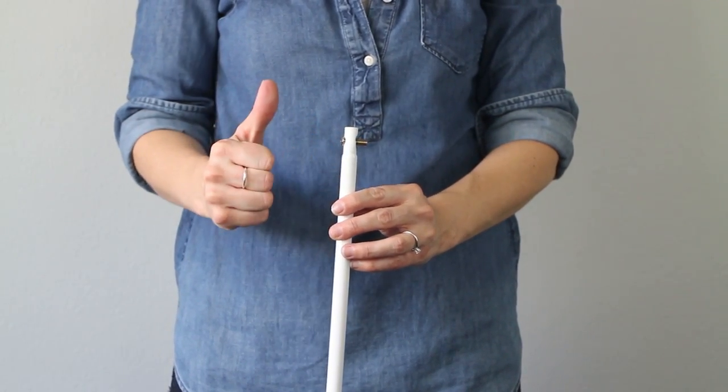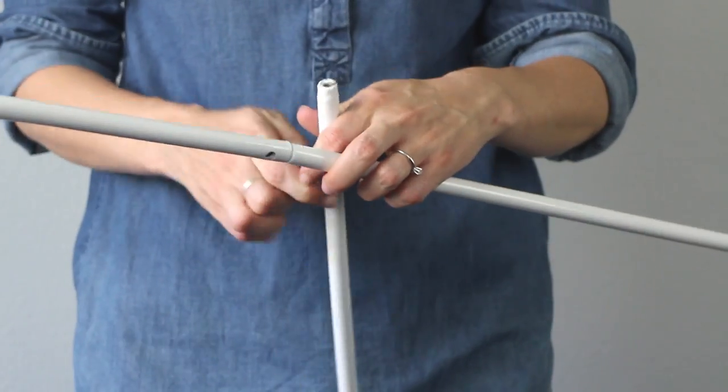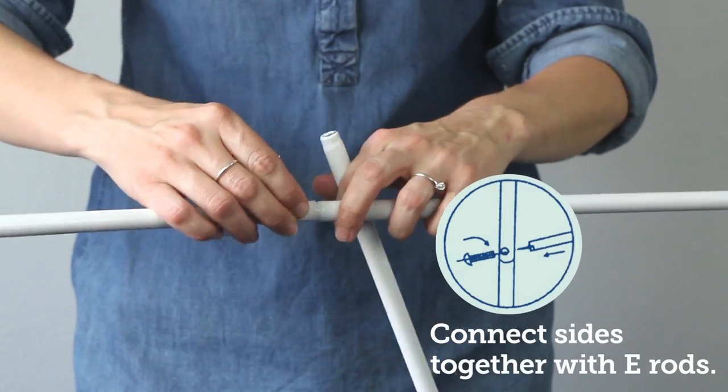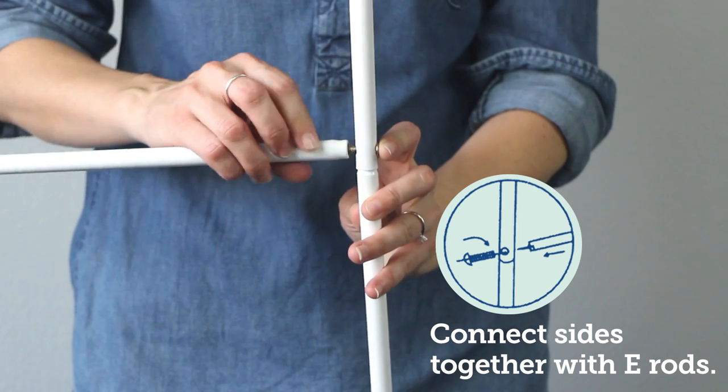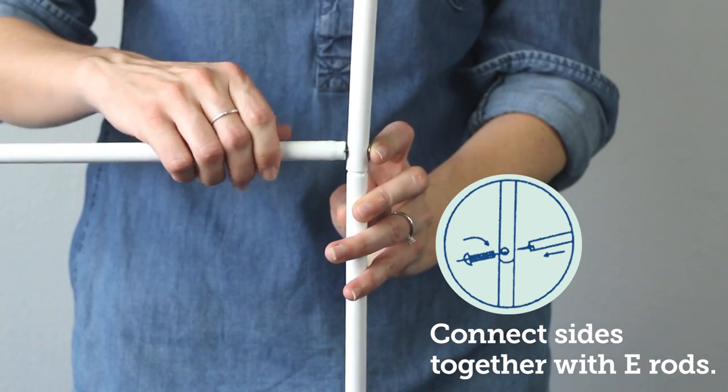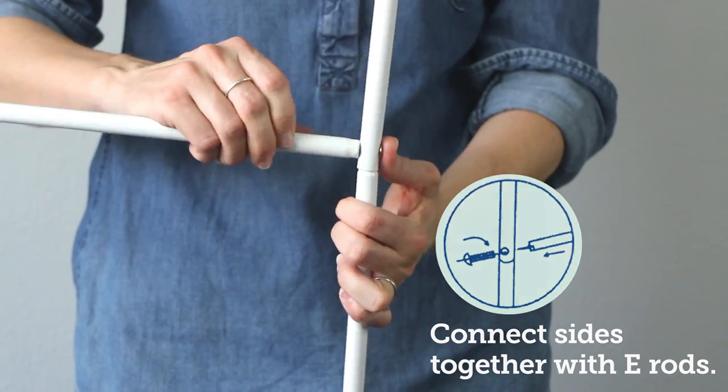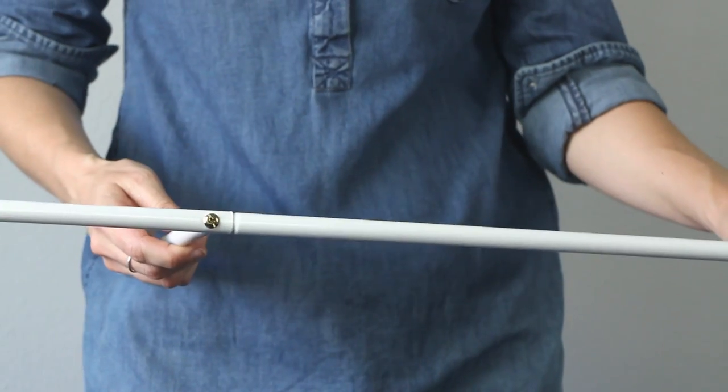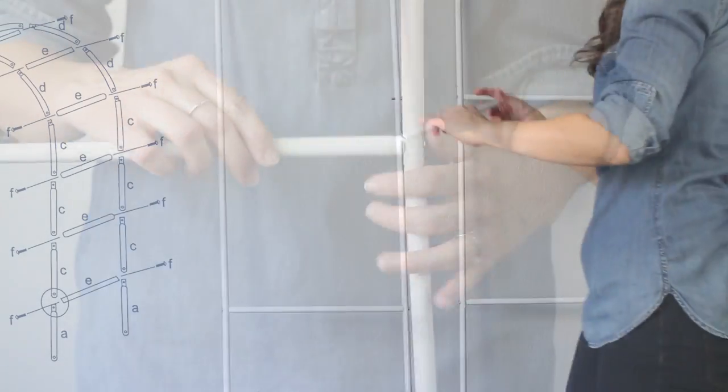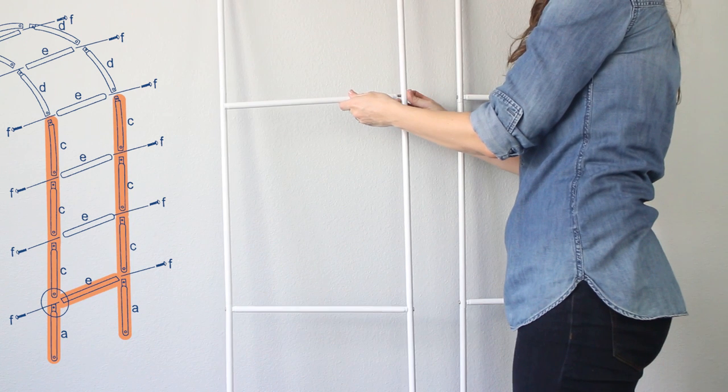This is definitely a hack. There are some holes that are a little bit tight but once we use that screwdriver it just solved the problem. So basically you connect sides together with the E rods. All the E rods are going to be kind of the stepping rods of the ladder look. Those center pieces.